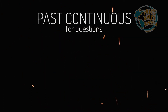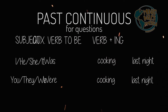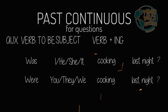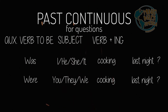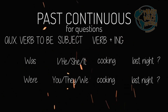In order to form the question form of the past continuous tense, we're going to invert the subject and the auxiliary verb. We start our question with 'was' or 'were', depending on our subject, and we keep the present participle form of the verb. So: was he cooking last night? Or were you cooking last night?